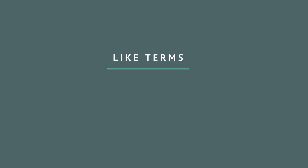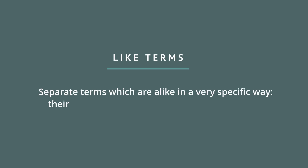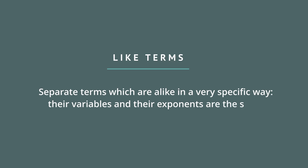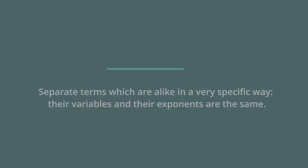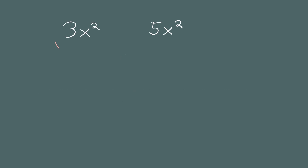Like terms are separate terms which are alike in a very specific way — their variables and their exponents are the same. For example, 3x squared and 5x squared are like terms. The variable part of both terms is the same, x squared. They have the same variable and the same exponents.